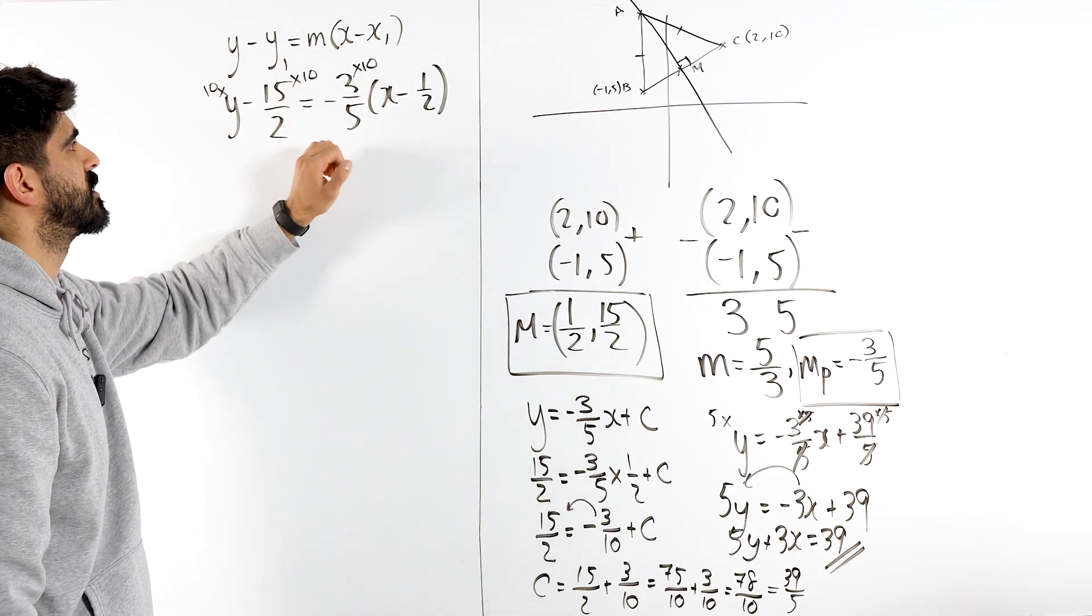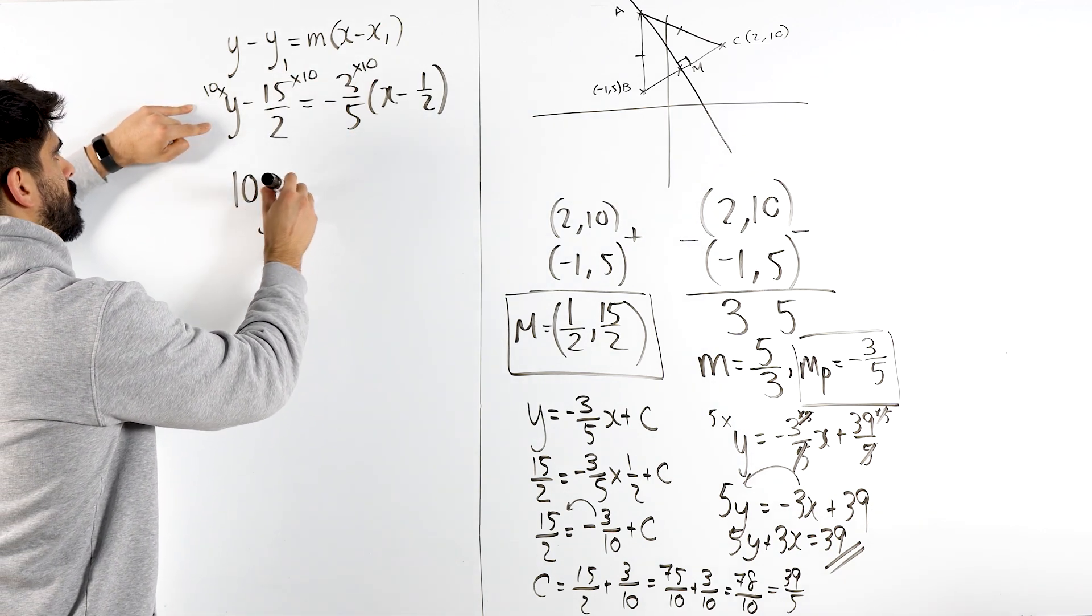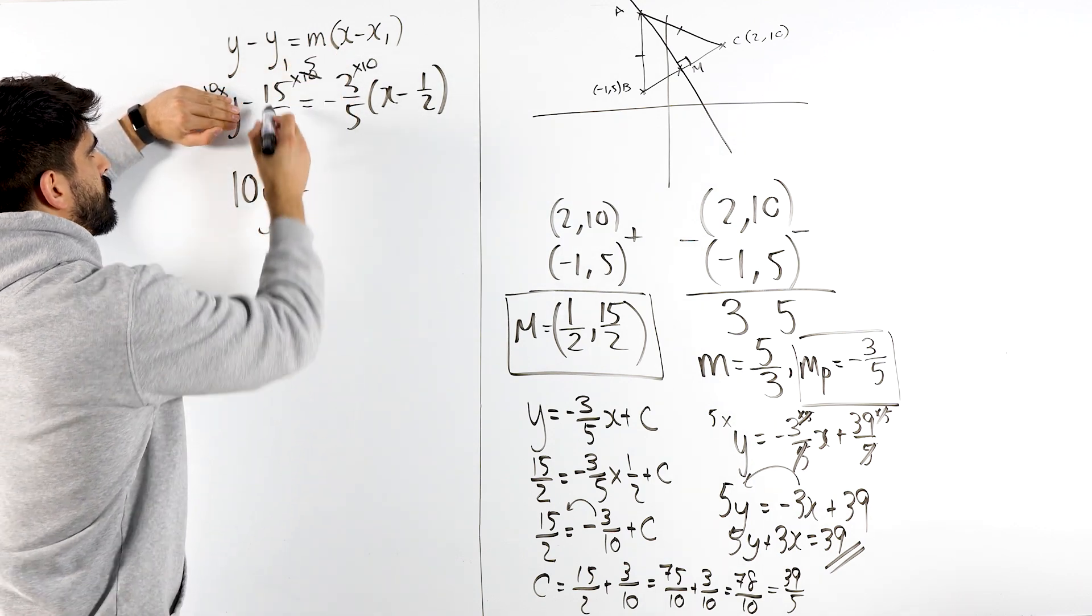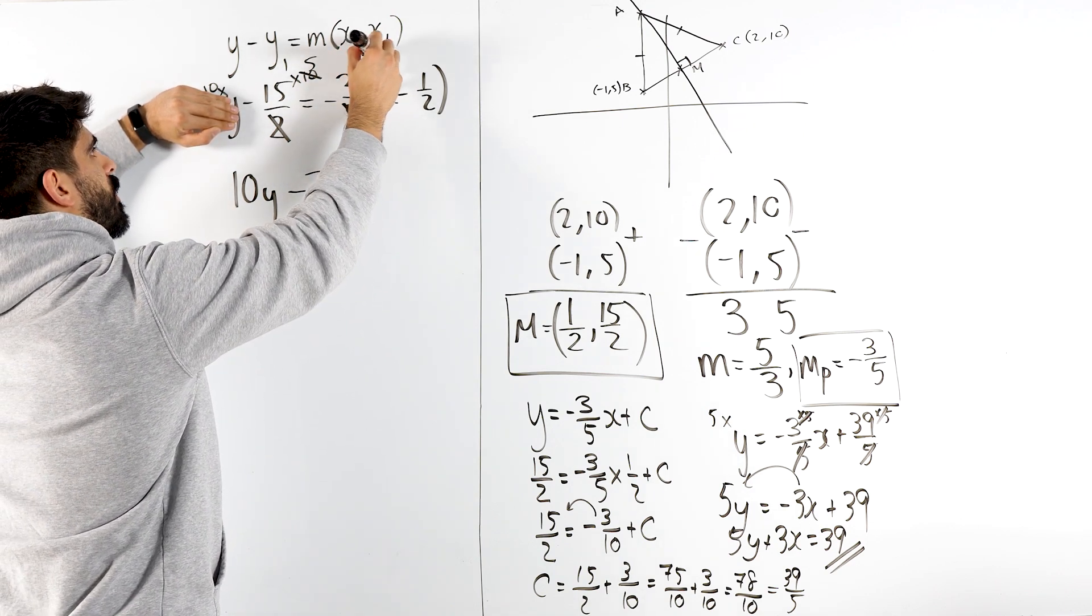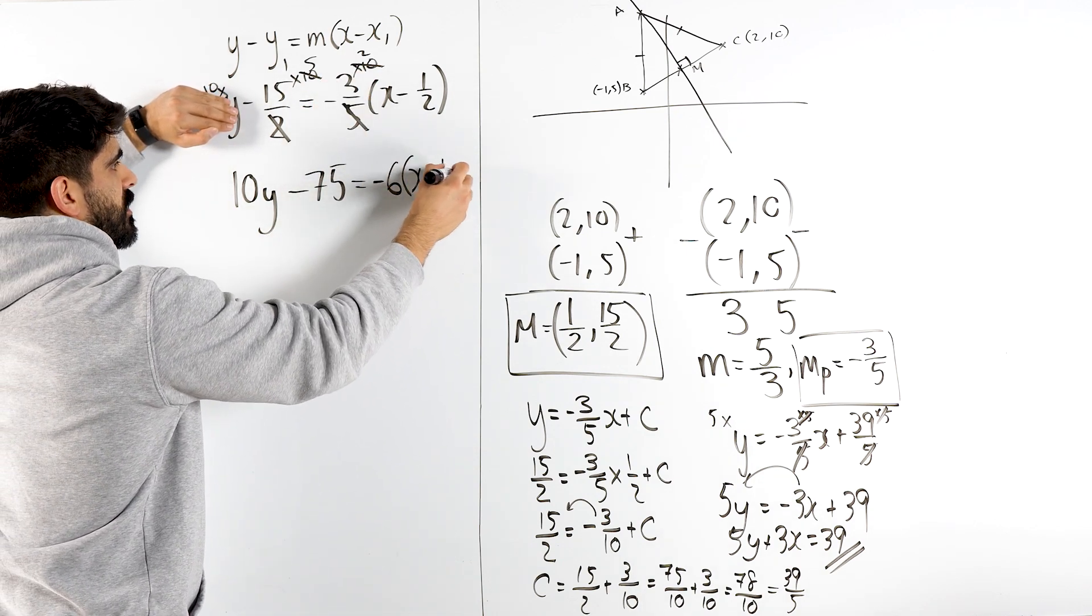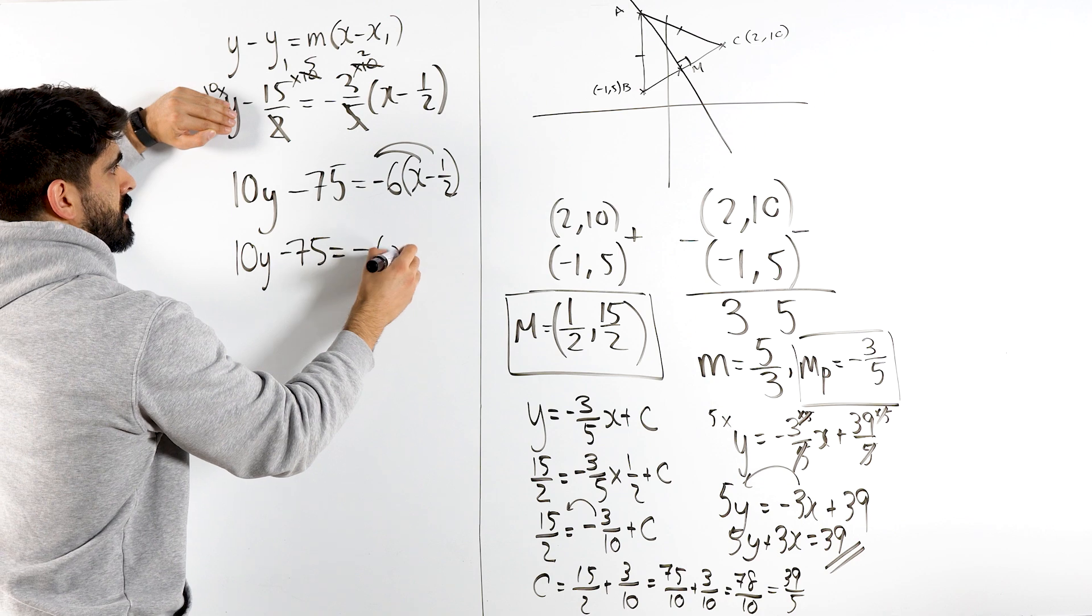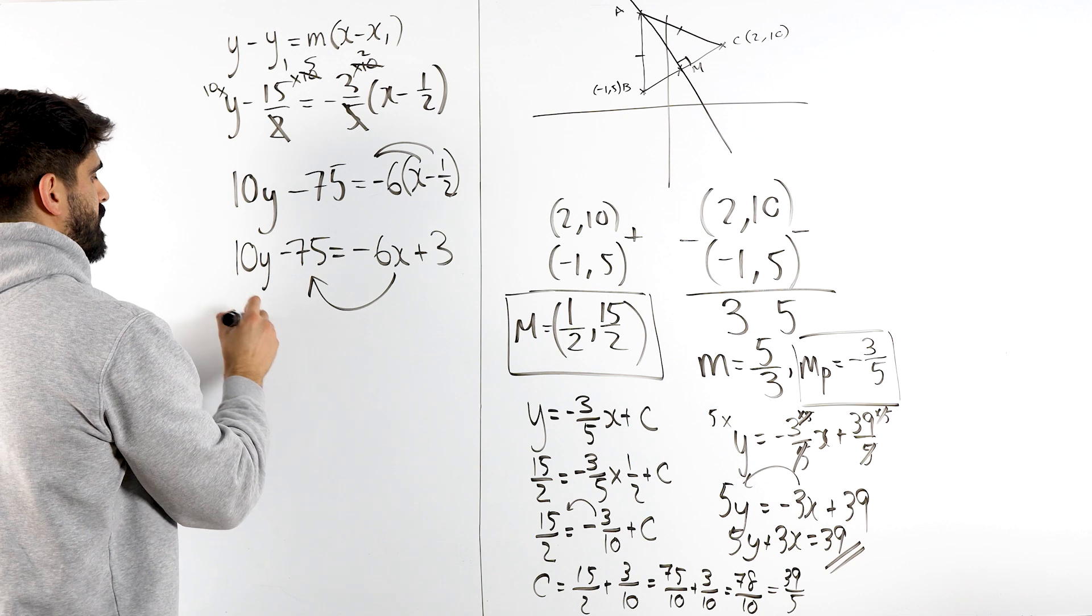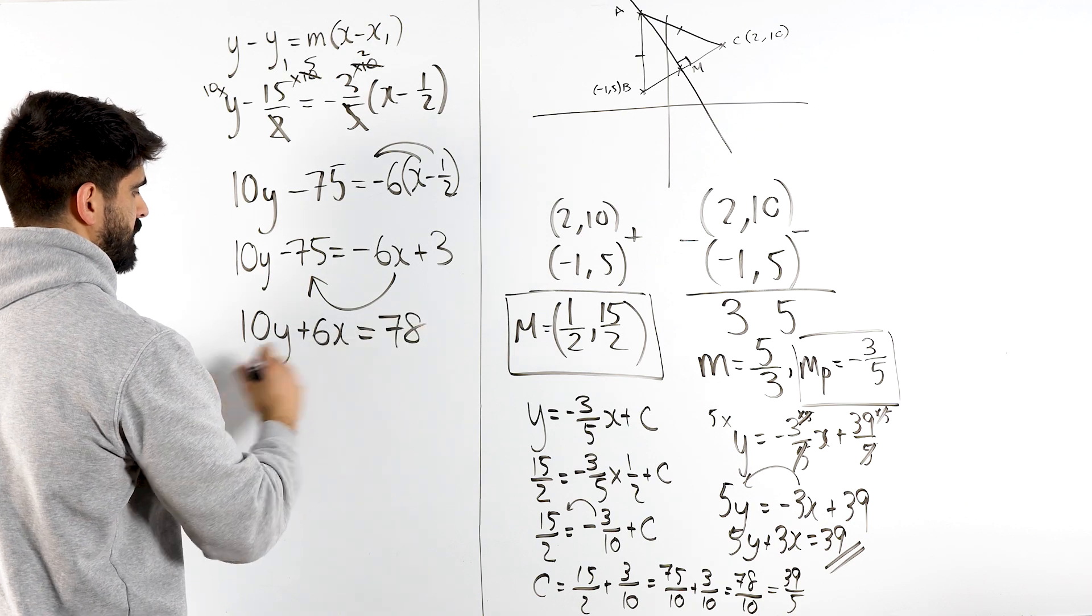Remember, this is all one term, so we only need to multiply this thing by 10. So here we get 10y minus, here, 2 goes into 10 five times, 15 times 5 is 75, so minus 75 equals, 5 goes into 10 twice, minus 3 times 2 is 6, so minus 6 times x minus a half. Now let's expand. 10y minus 75 is minus 6x plus 3. Let's bring this here and that there. Bringing that here, we get 10y plus 6x equals 75 plus 3, which is 78. Then you just divide everything by 2.